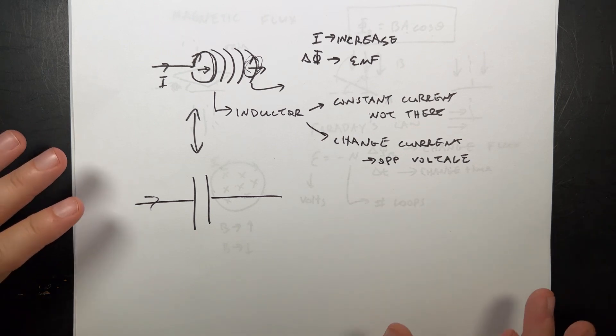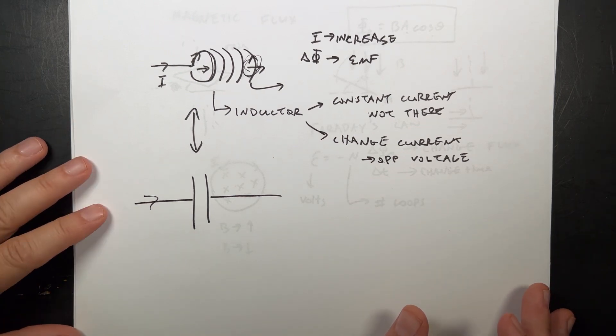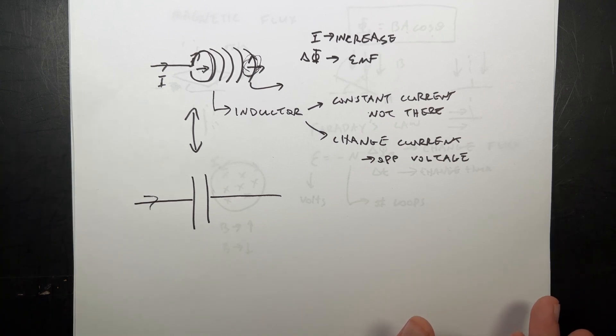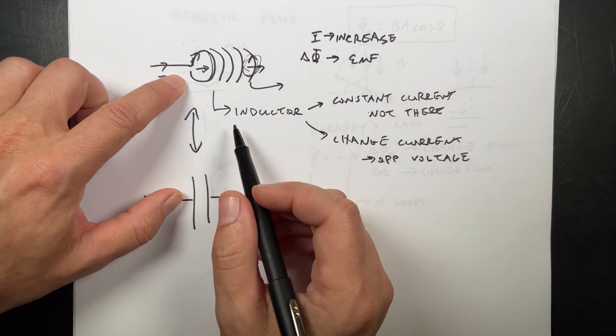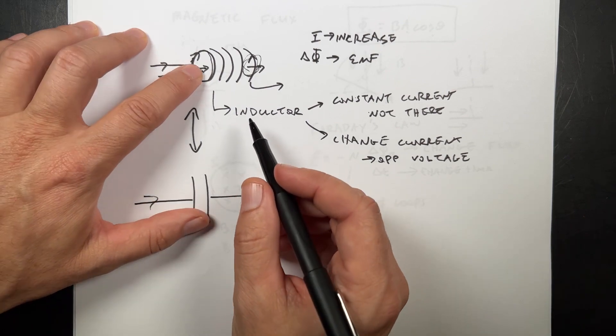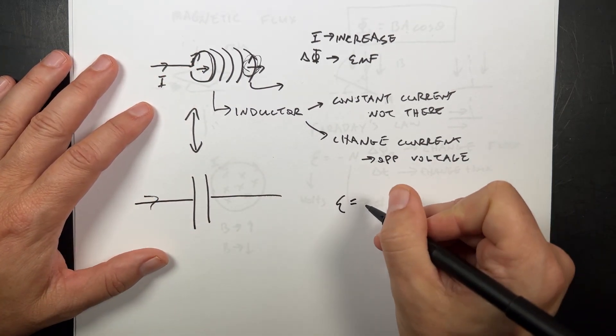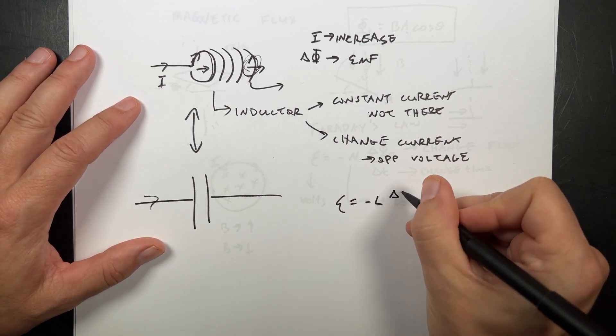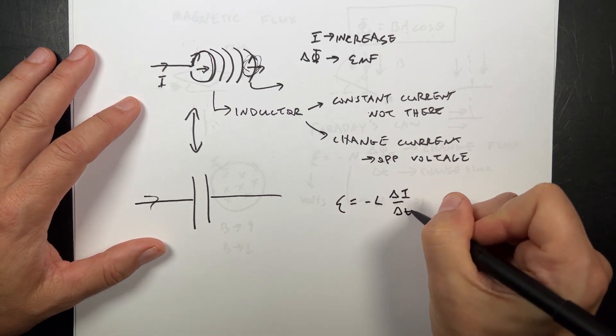They did talk about transformers. They've just given the transformer equation, so I don't really want to talk about that right now. We'll talk about transformers at some other point. So, I can calculate the change in the voltage across this EMF for an inductor as negative L delta I delta T,